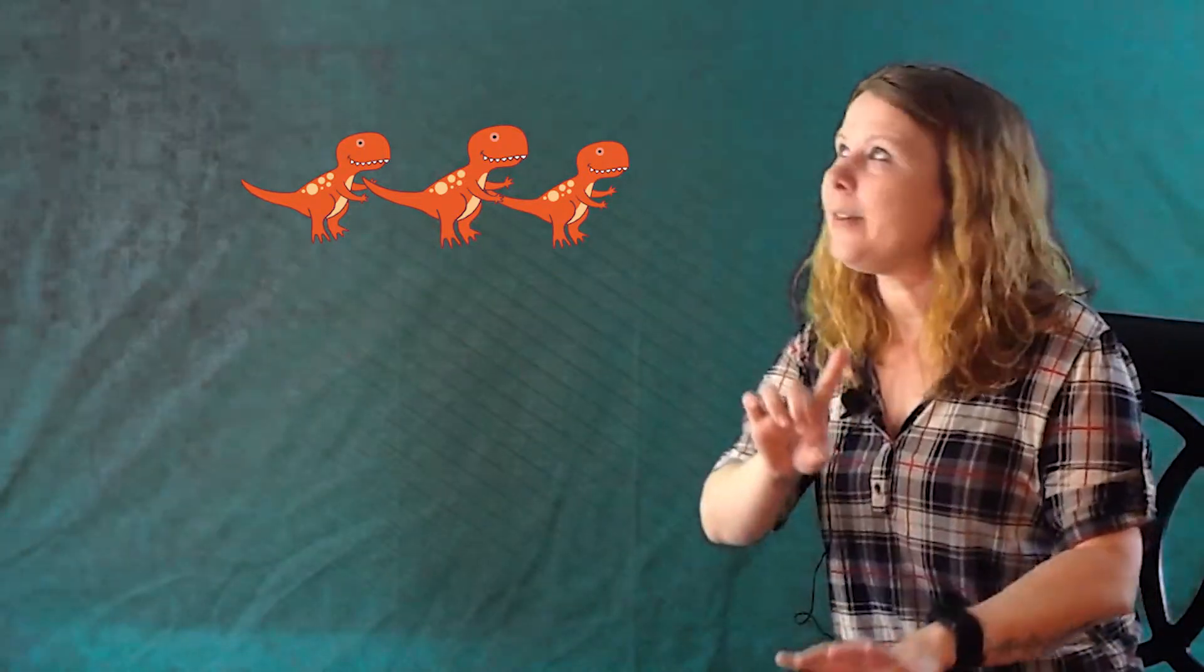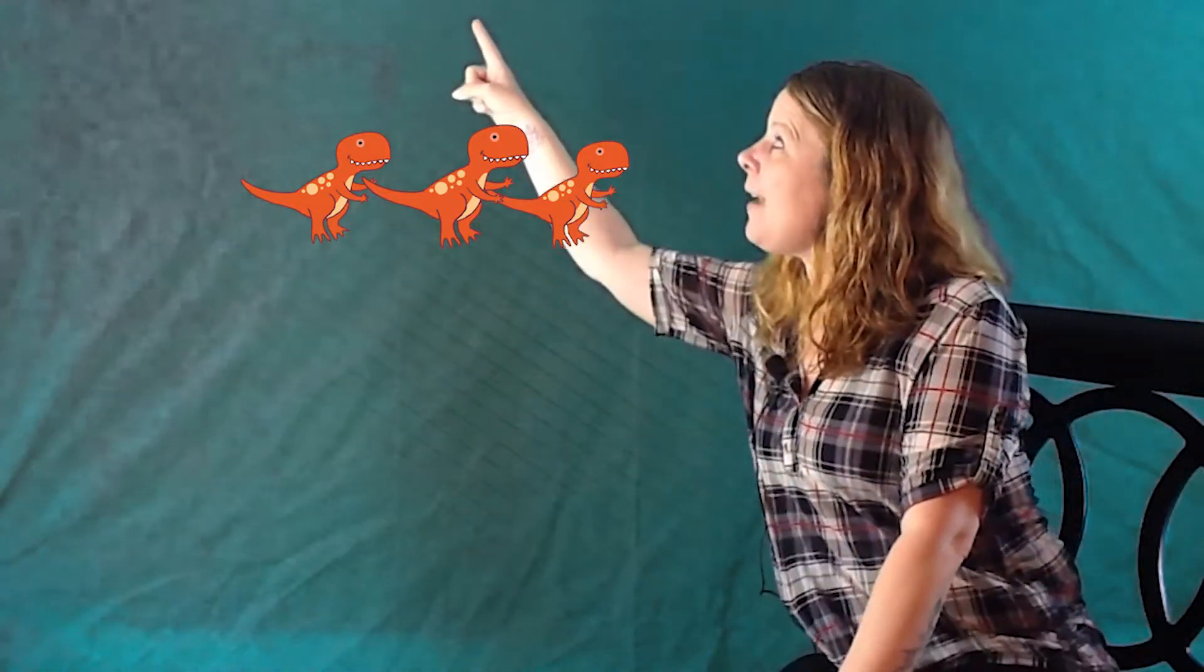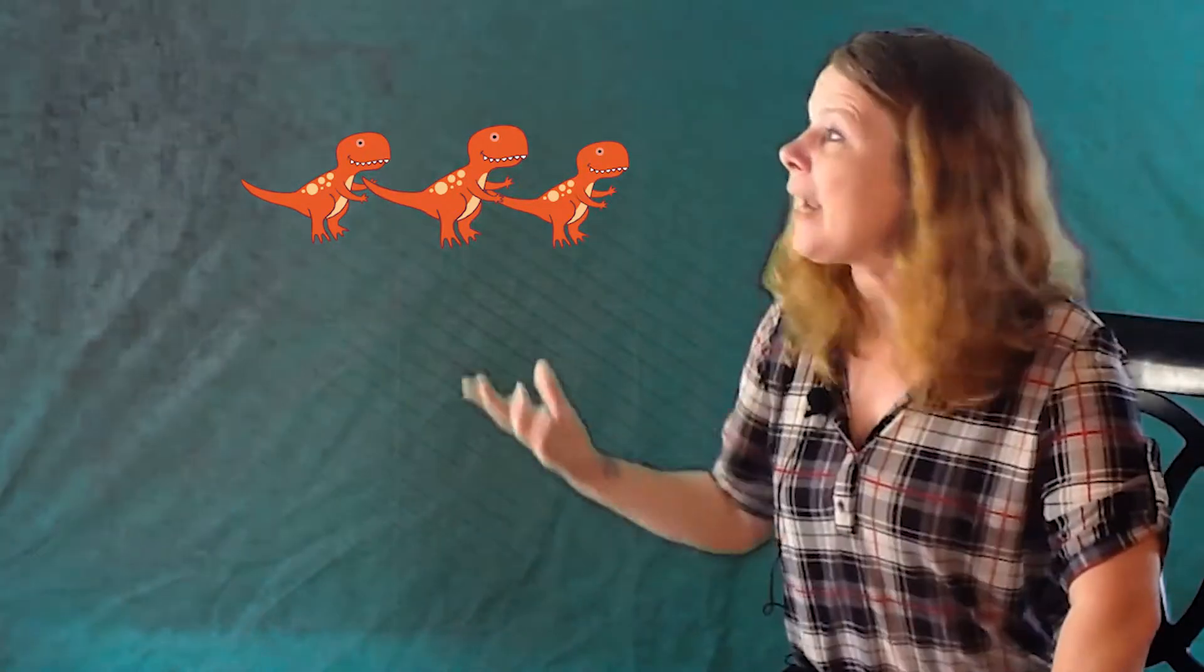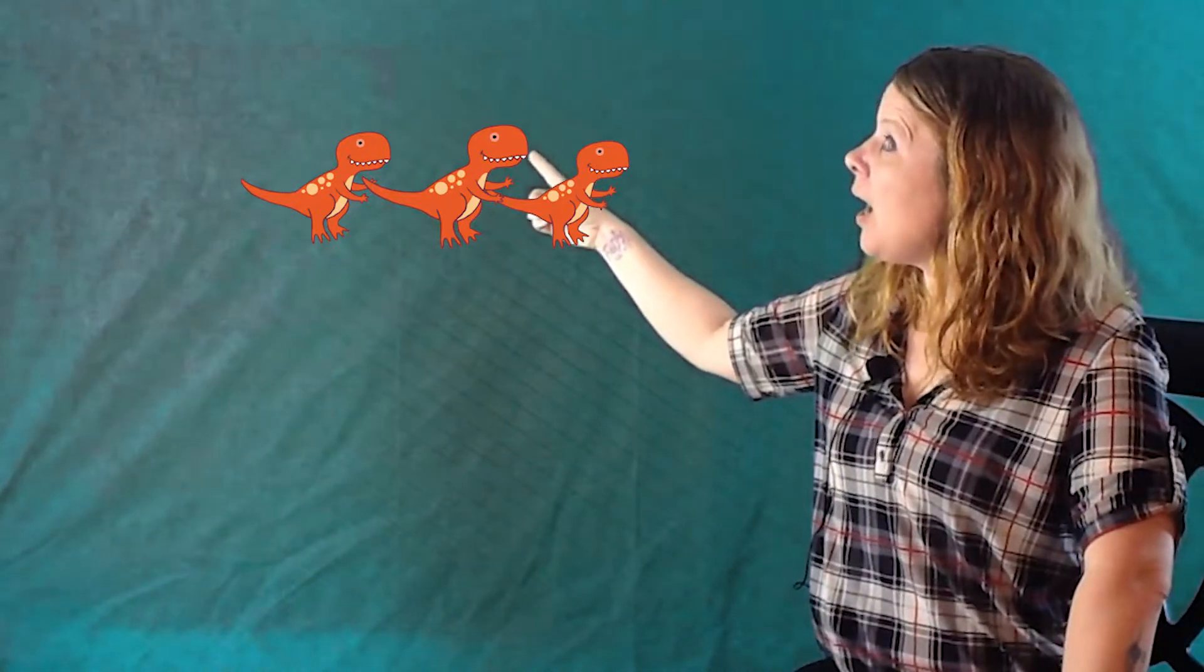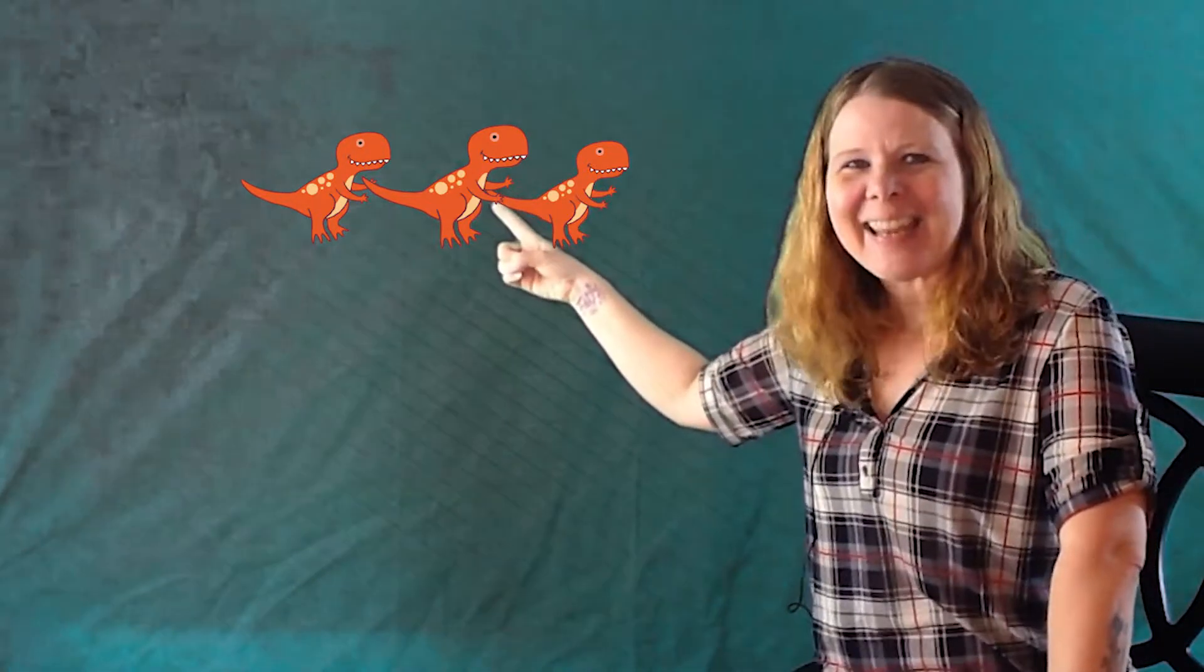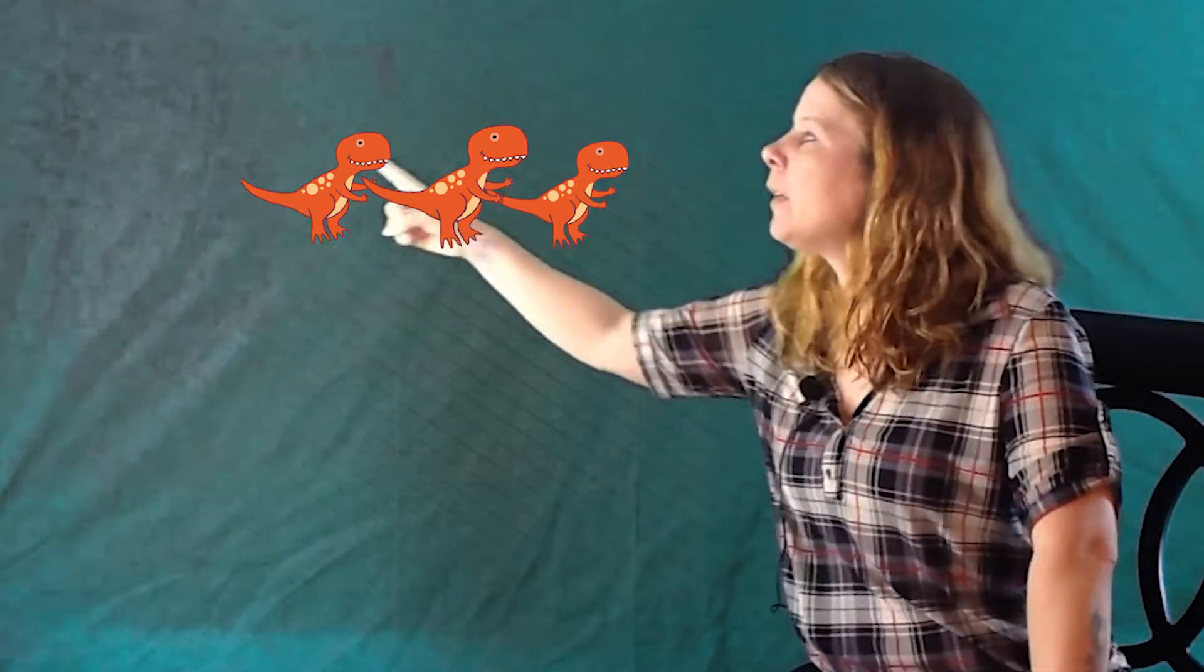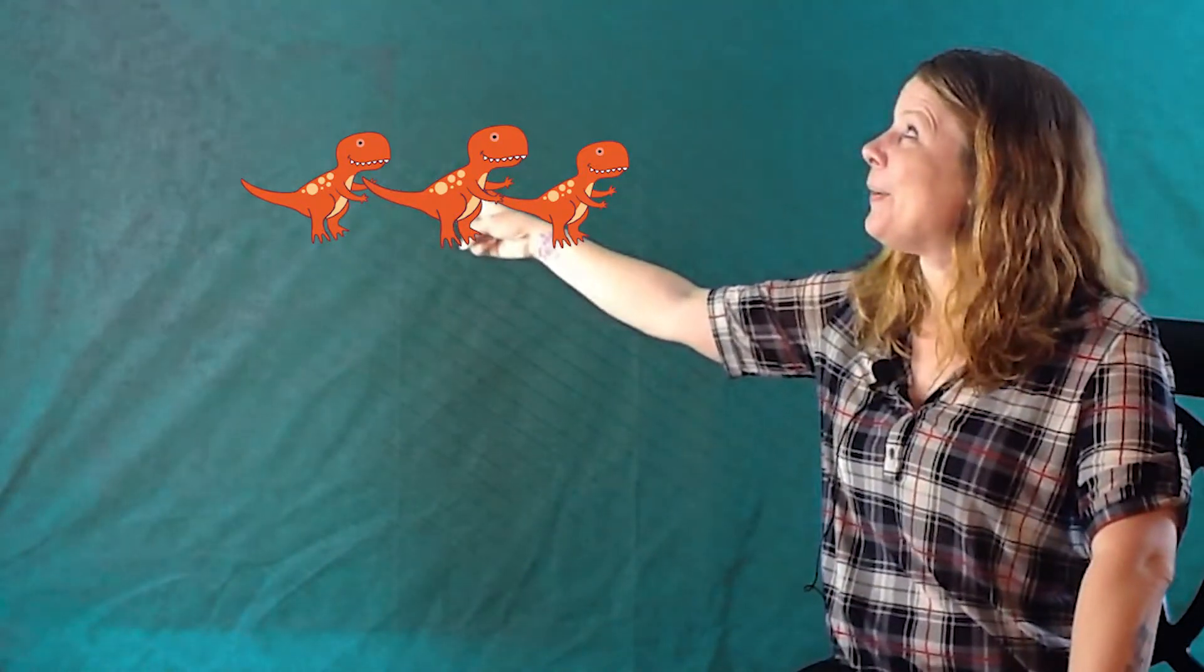Okay, I'm going to trick you. This is another number. What number is that? What number is that? You said 3. You are so right. It is the number 3. So let's count 3 T-Rexes. 1, 2, 3. You got it! One more time. 1, 2, 3. You got it! Yay!